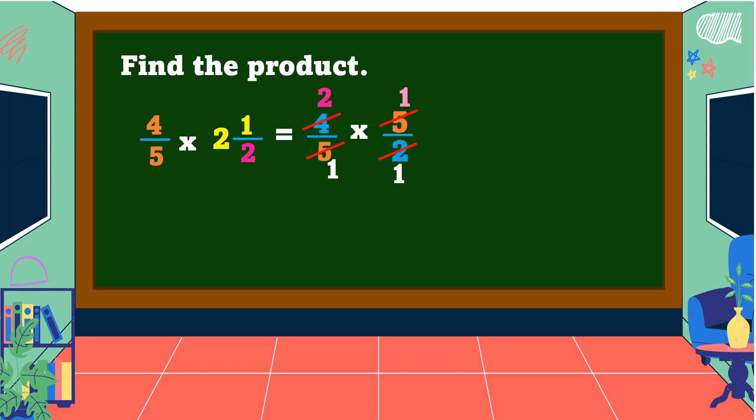Then we're going to multiply both numerators: two times one is equal to two. We also multiply both denominators: one times one is equal to one. Then reduce your answer to its lowest term if possible — two over one is equal to two.